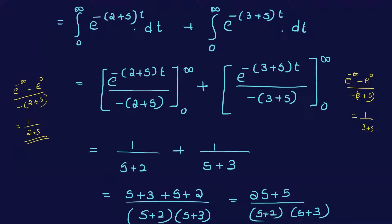Cross-multiplying and combining: 1/(s+2) + 1/(s+3) = (s+3 + s+2) / [(s+2)(s+3)] = (2s+5) / [(s+2)(s+3)].